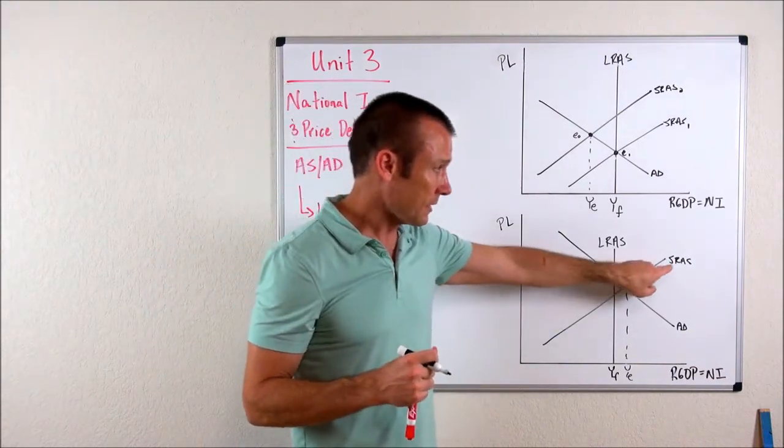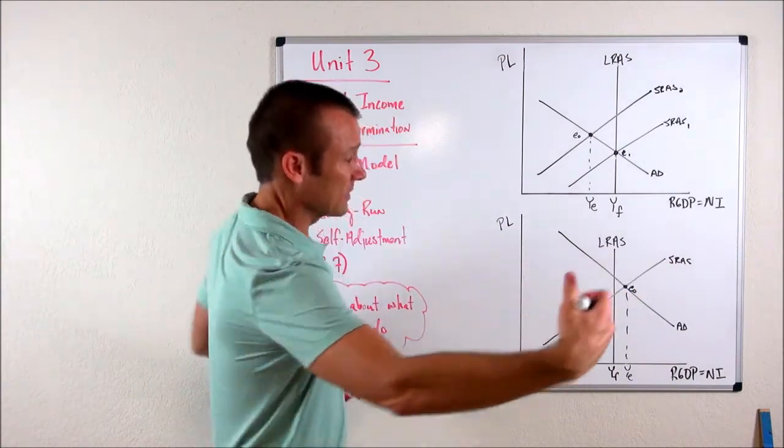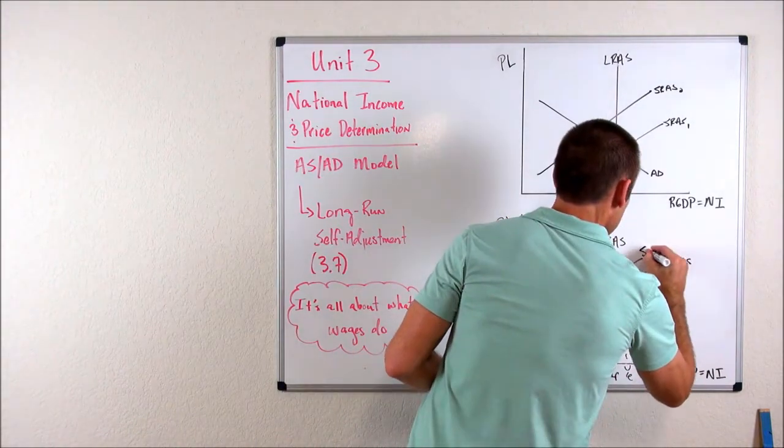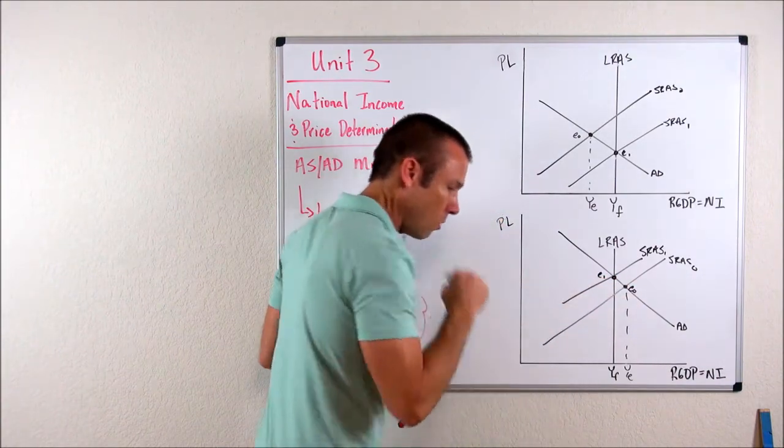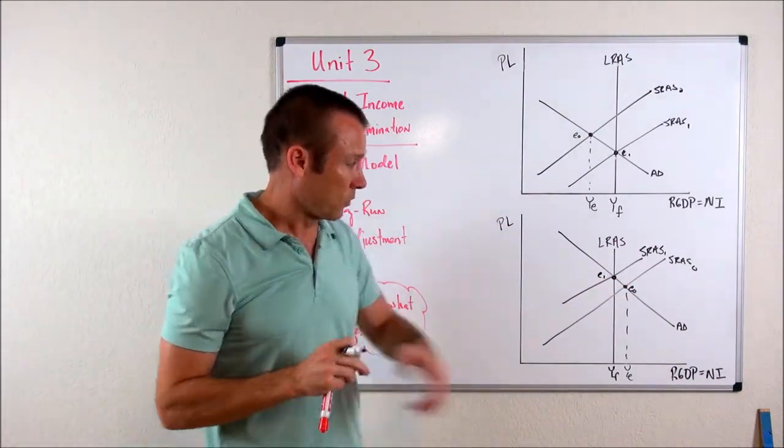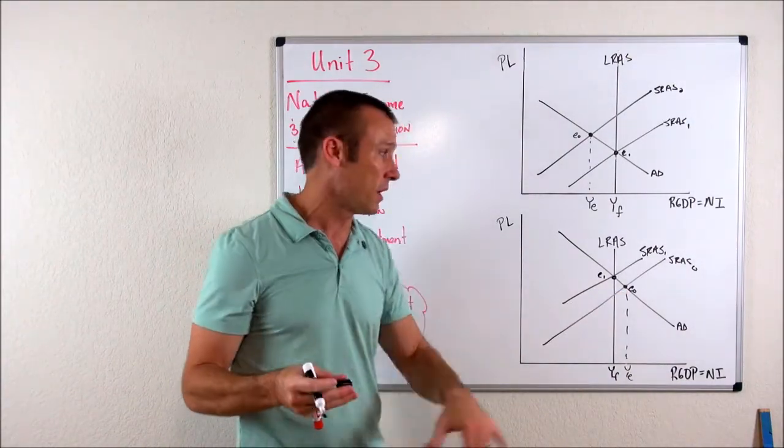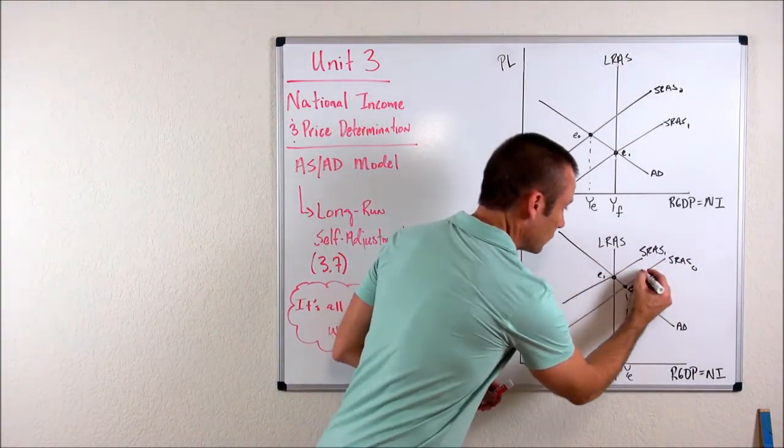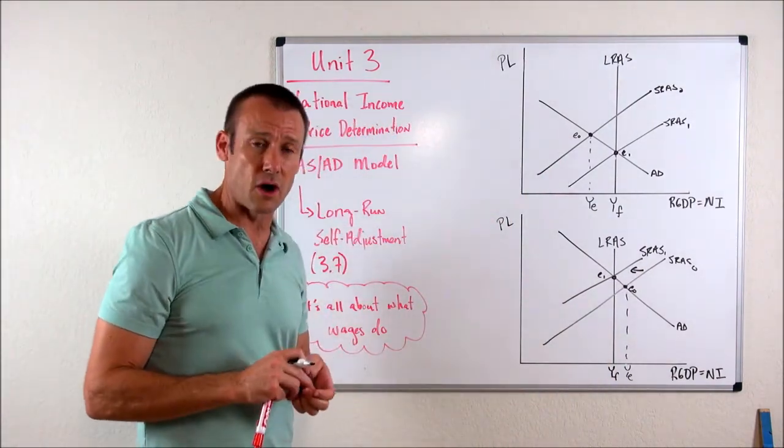So what's going to happen to wages if we have what you might think of as a shortage of workers? Well, the price of labor is going to go up. Wages are going to go up. And when wages go up, hey, that's an increase in the cost of production. So our total production line, that's going to decrease. And what does it decrease? It's a shift left. SRAS sub one, E sub one. Remember, it's all about what wages do. If we're booming, wages are going to go up. When wages go up, that's a cost of production going up. And that is the SRAS curve, the total production line shifting to the left. That is our self adjustment in the long run.